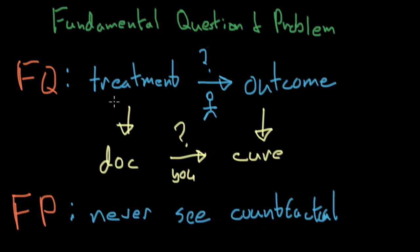So causal inference always concerns itself with asking this fundamental question. What is the treatment's causal effect on a particular individual as measured by an outcome? And it tries to solve this fundamental problem in lots of different ways. The problem that you're never able to see the counterfactual.